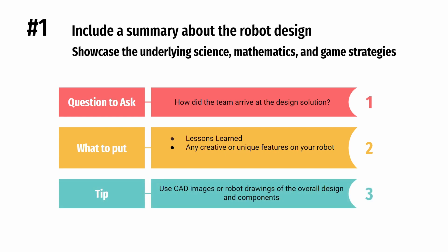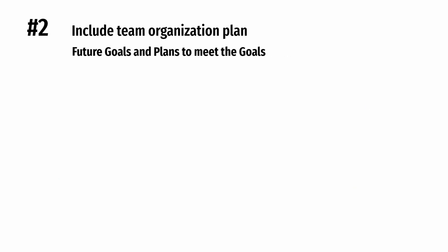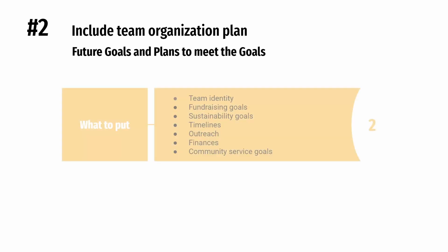Your bot should have a balance between form, function, and aesthetics, and to showcase these features, put CAD images or robot drawings of the overall design and components. Beyond just showing your team knows what they're doing robot-wise, make sure to add the team organization plan. This plan describes the robot team's future goals and the steps the team will take to reach those goals and develop skills.